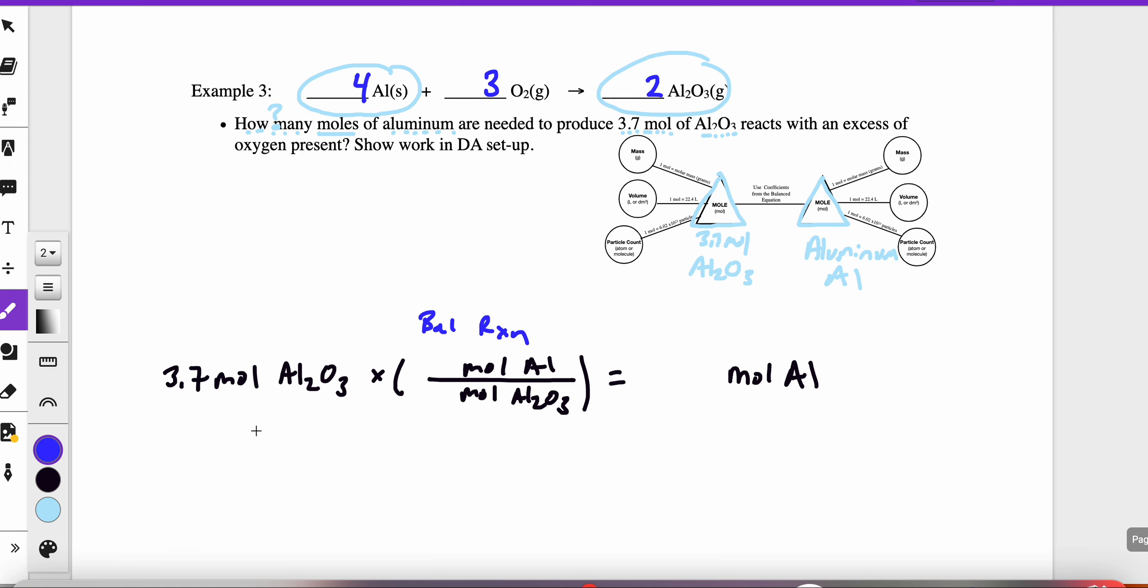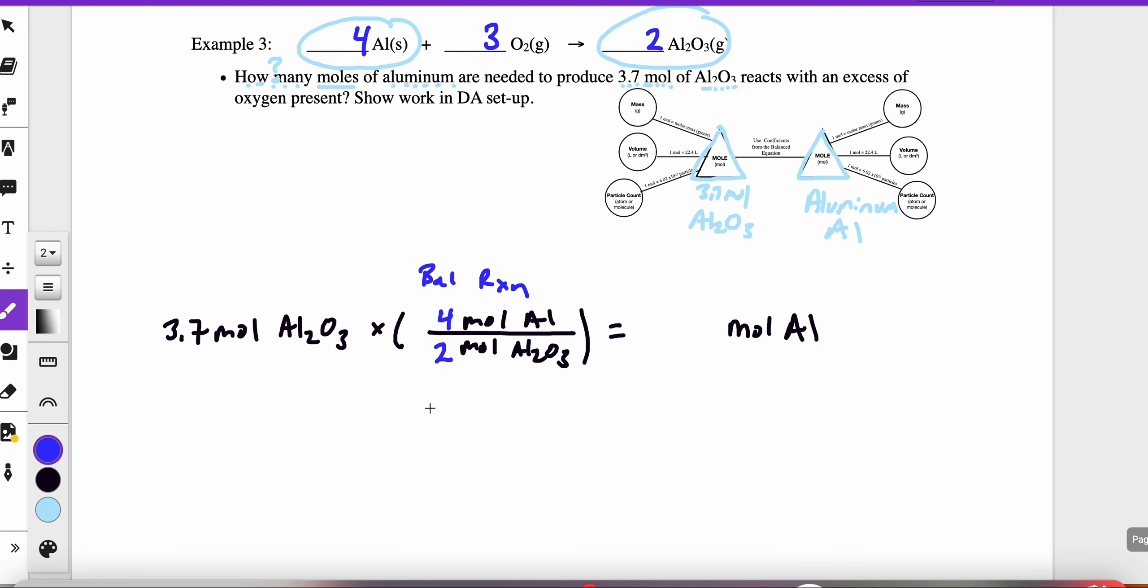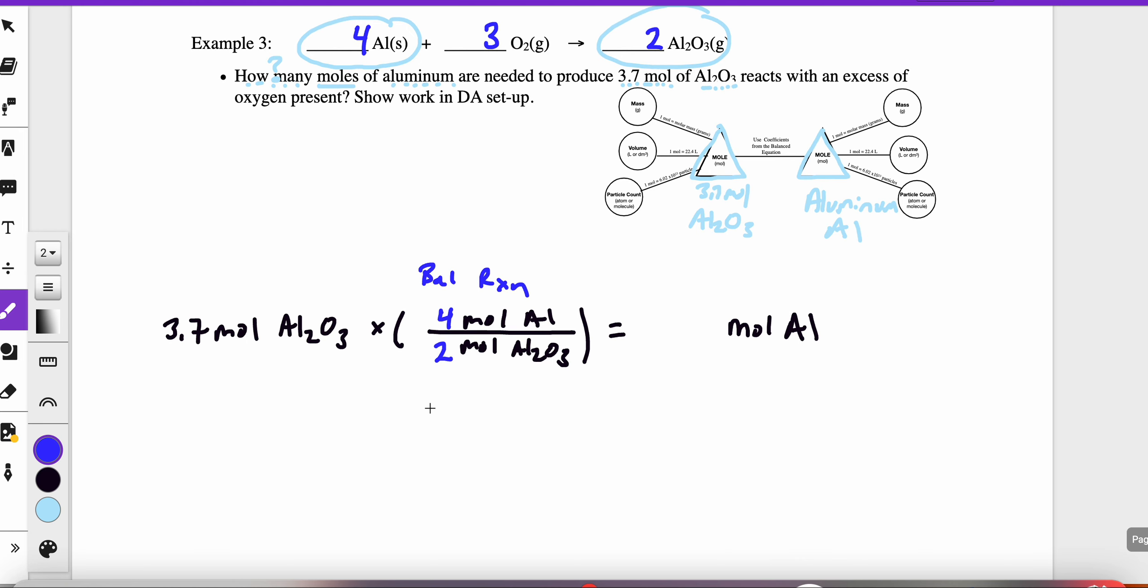So now that I have a balanced reaction, I circled the two substances in the reaction of interest. Now I know what to put down here in the equivalents. So four moles of aluminum will help to form two moles of aluminum oxide. So now I need to use my calculator. 3.7 times four divided by two. And when I put that into the calculator, I will end up with 7.4 moles of aluminum.